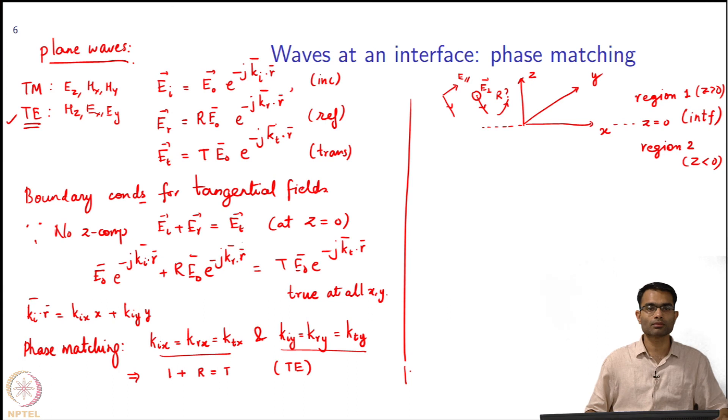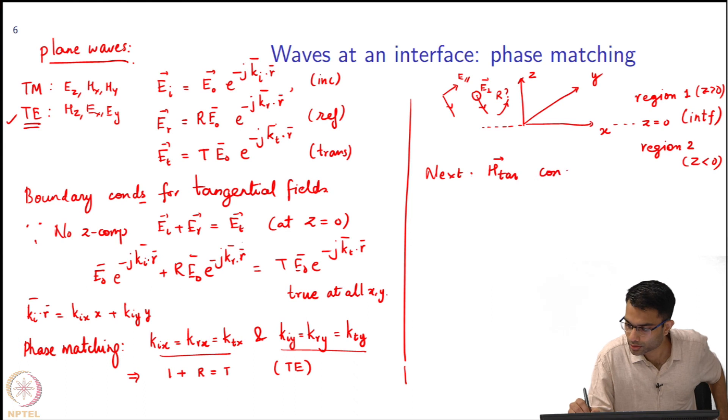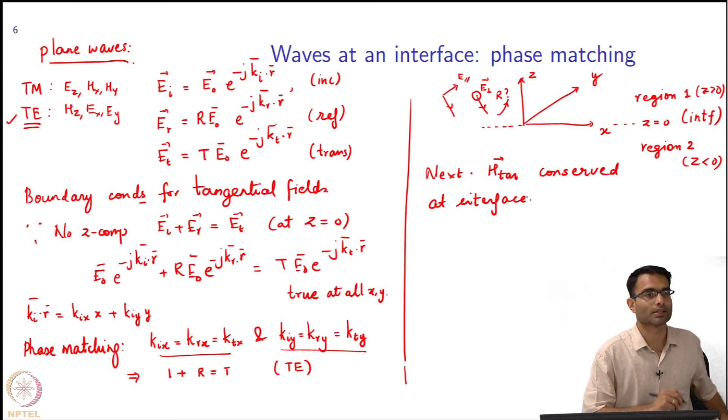When we derived our reflection coefficients from a planar interface in the undergrad course, what did we do? We used tangential boundary conditions for both E and H, not normal boundary conditions. I have used tangential boundary conditions for E. Next what remains? H tangent. So next is going to be H tangent conserved at the interface. This is actually how you derive your r for TE and TM polarization. The second equation comes from here and you just enforce it.